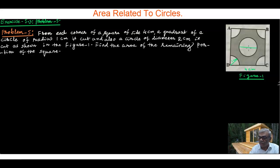The circle of diameter 2 cm is shown in figure 1. Find the area of the remaining portion of the square - that is the shaded portion here.